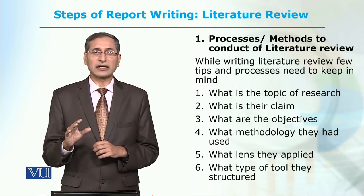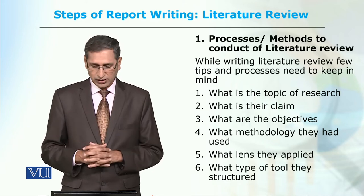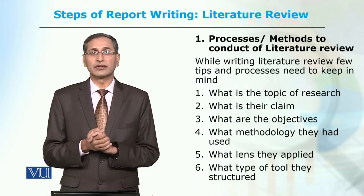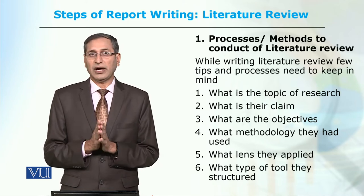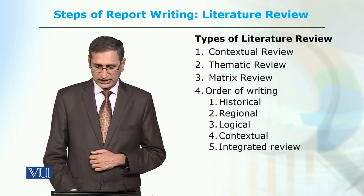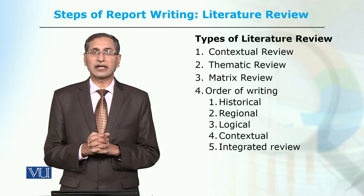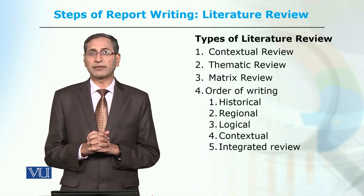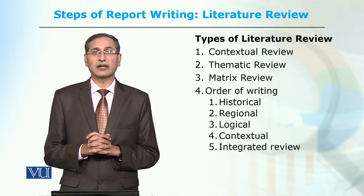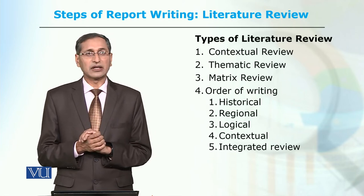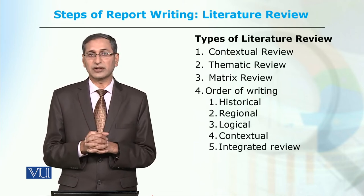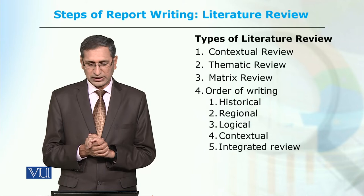You must build your case logically yourself and write and present systematically — not just put someone else's work in front of the reader. Also consider: what tools and techniques did others use? Do they justify your study, or do different tools and techniques apply? Generally, there are six different types of literature review to keep in mind, but contextual review is mandatory. Thematic and matrix reviews — we discussed literature matrix in detail previously.